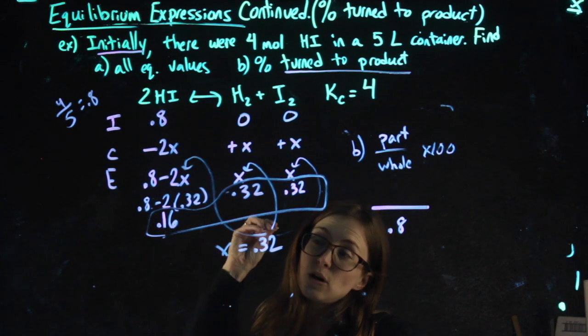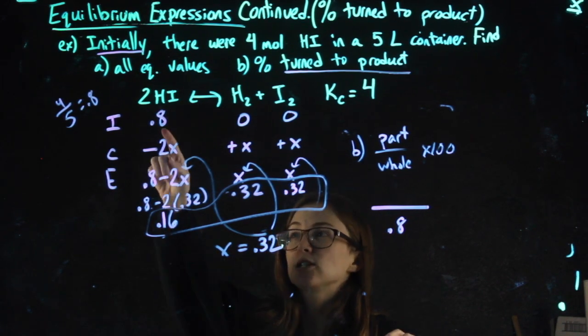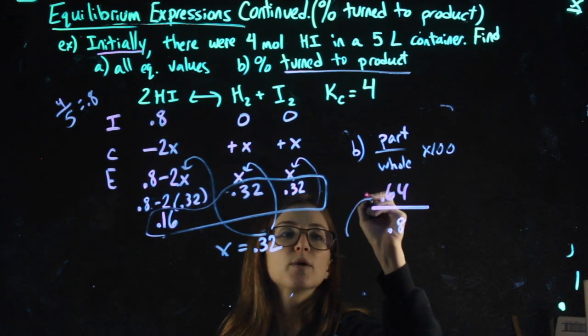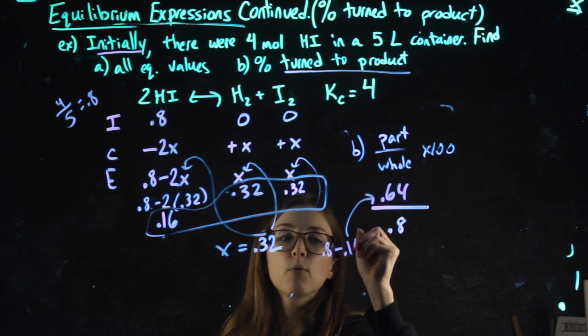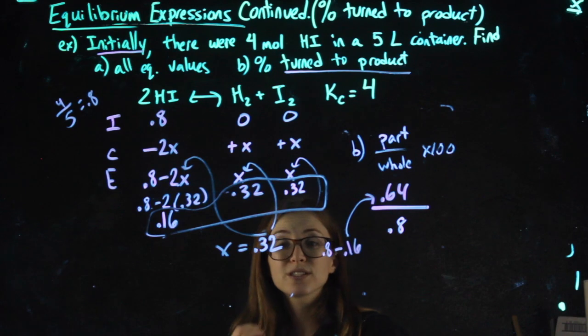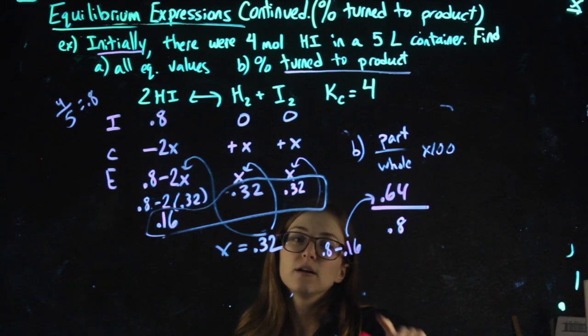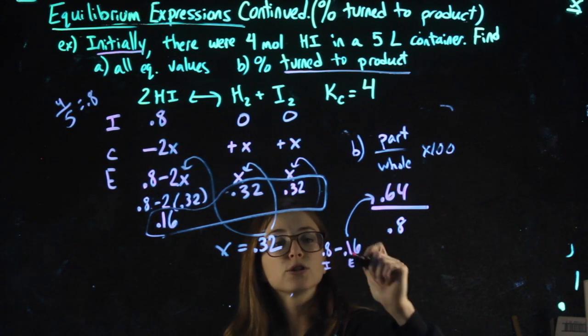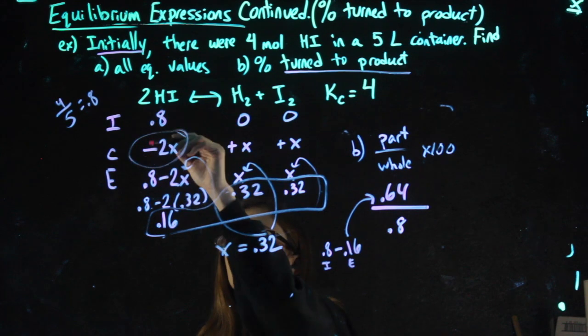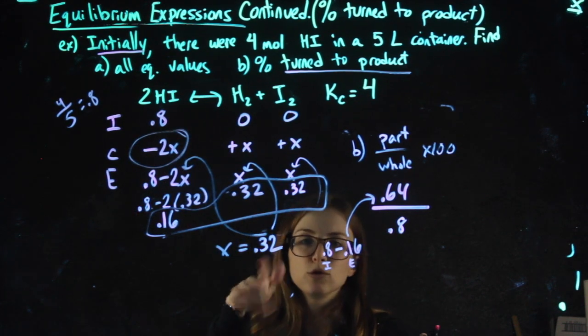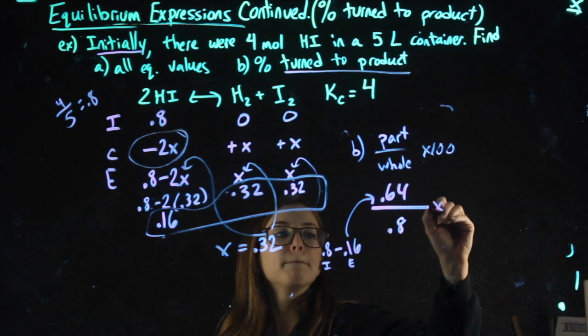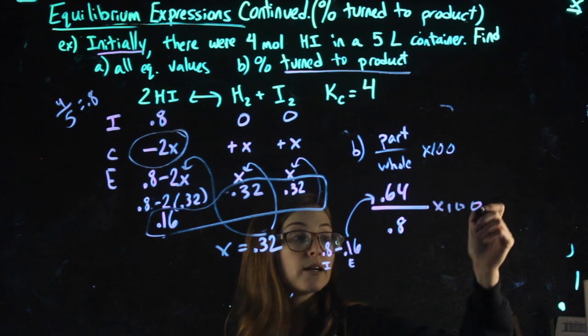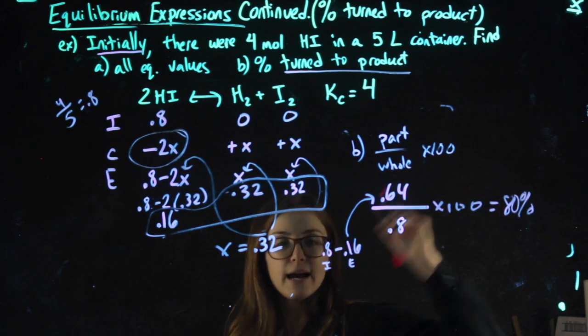Of all of the 0.8 that I could have turned into product, I didn't turn 0.16, so it's about 0.64. In fact, if I actually do subtraction, 0.8 minus 0.16 gets me 0.64. So what I did there is I said, well, of the 0.8 I was left with 0.16, so 0.64 is the part of this 0.8 that actually turns into the product. Some people remember this as the initial minus the equilibrium. You'll also know a different way of finding it is just taking the change row, ignoring the negative sign, so 2 times 0.32. So 0.64 divided by 0.8 times 100 gets me 80%.